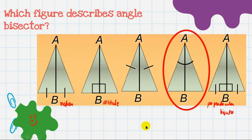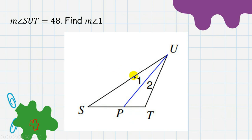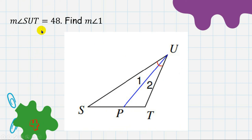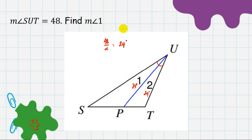Question 4: the measure of angle SUT is 48 degrees. What is the measurement of angle 1? Since the angle bisector divides the angle into two congruent parts, divide 48 by 2. The answer is 24 degrees. So angle 1 is 24 degrees, and angle 2 is also 24 degrees.